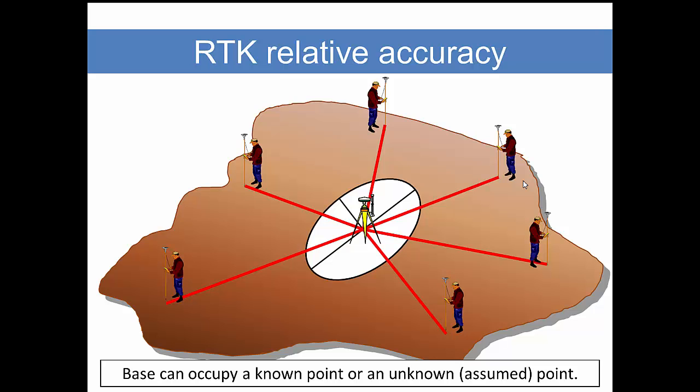We said that we typically set up the base unit at a point of known position. Well, that's a generalization. Really, the base can occupy a point of known position or it may be an unknown point. But you see, we can assume a coordinate just as we have in the survey world for many years. Prior to the GPS age, we commonly would use an assumed coordinate for simplicity of our calculations. Maybe northing 5000, easting 5000. We can still do the same thing with GNSS technology.